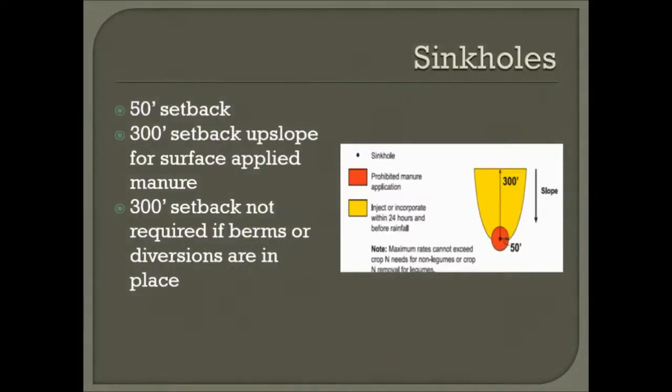Sinkholes: there's a 50-foot setback from the sinkhole and a 300-foot setback upslope for surface-applied manure. The 300-foot upslope setback is not required if there are berms or diversions in place around the sinkhole.